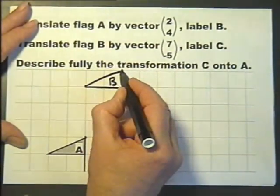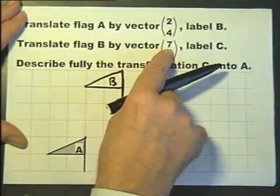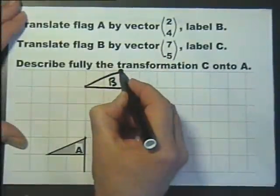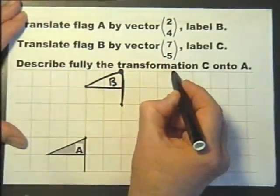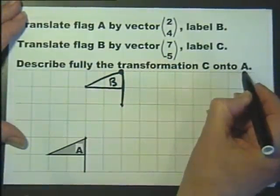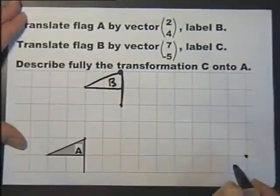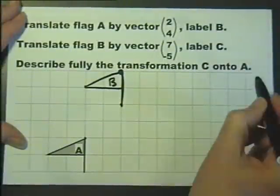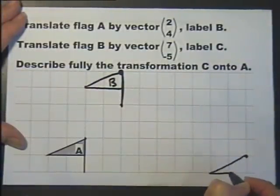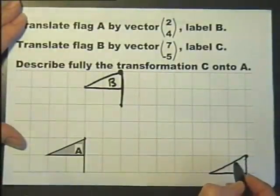Translate flag B by the vector (7, -5). So let's just take that point and move it 7 across and 5 down. It's going to be off the page — never mind. So it goes like that. Let's label it C.